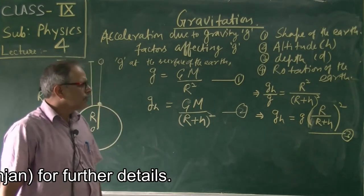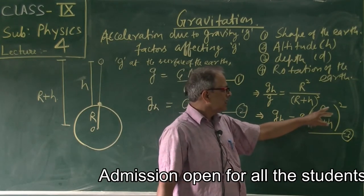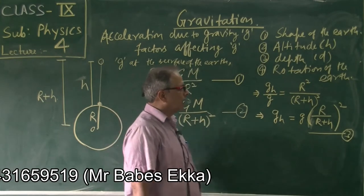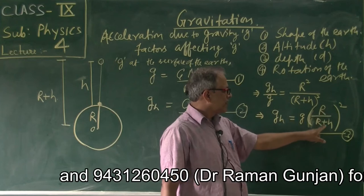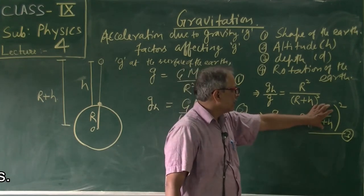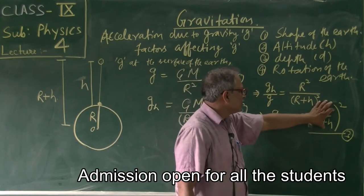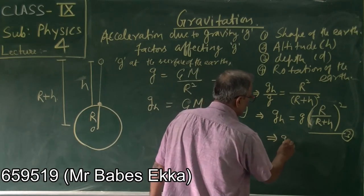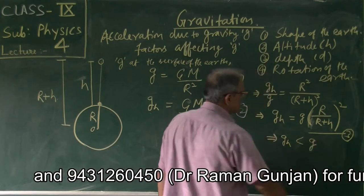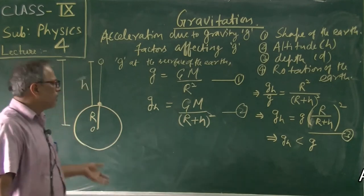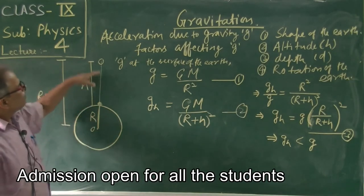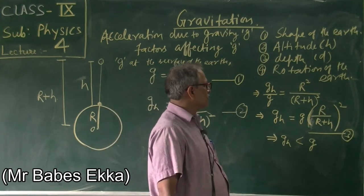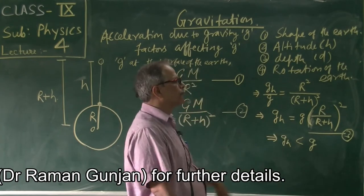From this formula, naturally r is less than r plus h, so the denominator is greater than the numerator. This fraction is less than 1, meaning g_h is less than g. As we go above the surface of the earth, acceleration due to gravity decreases in accordance with this formula.